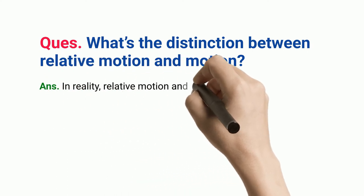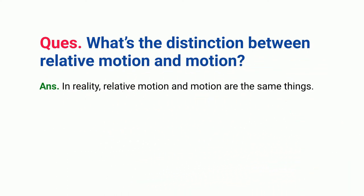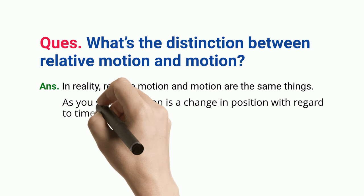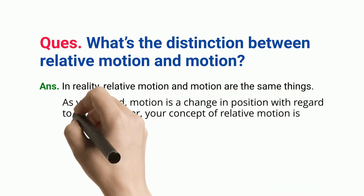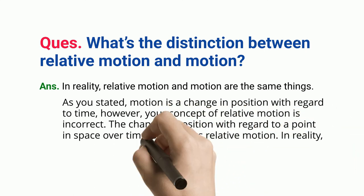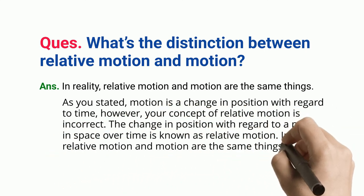Answer: In reality, relative motion and motion are the same things. As you stated, motion is a change in position with regard to time. However, your concept of relative motion is incorrect. The change in position with regard to a point in space over time is known as relative motion.